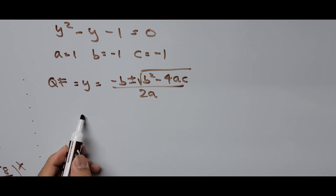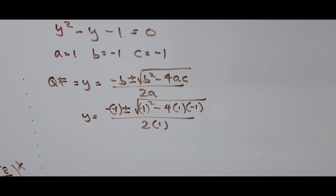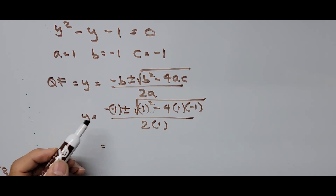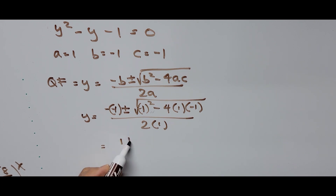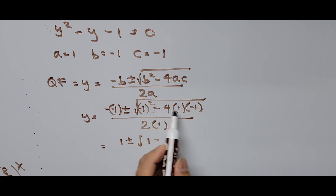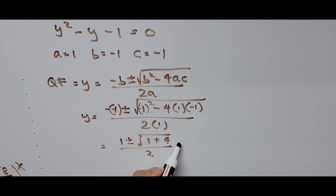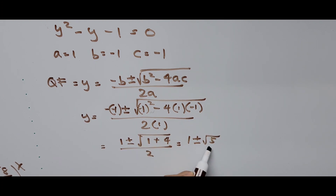Substituting into the quadratic formula: negative b is negative 1 times negative, which is positive, plus or minus — then b² is negative 1 squared which is 1, minus 4 times negative 1 (negative times negative is positive), so plus 4 — all divided by 2 times a = 1, so divided by 2. This gives y equals 1 plus or minus the square root of 1 plus 4, which is 5, divided by 2.